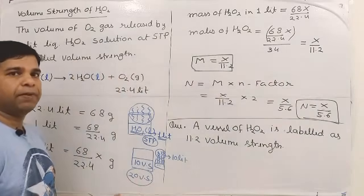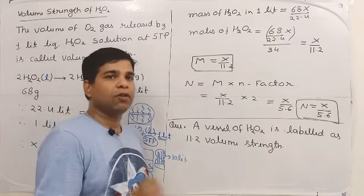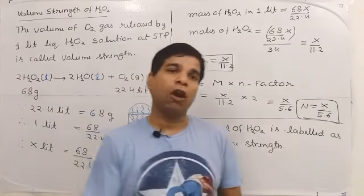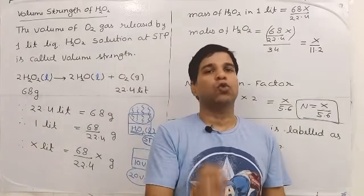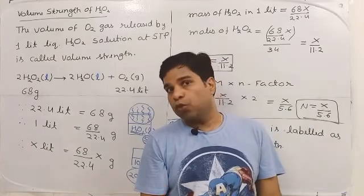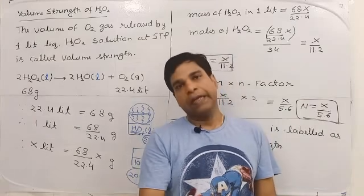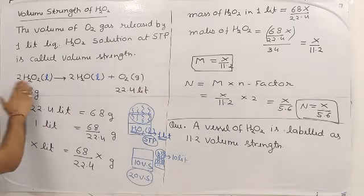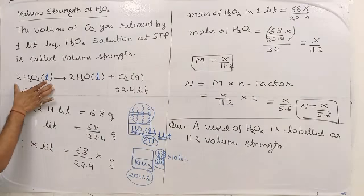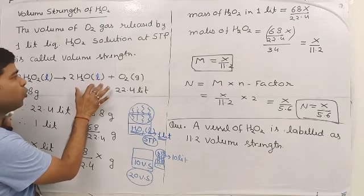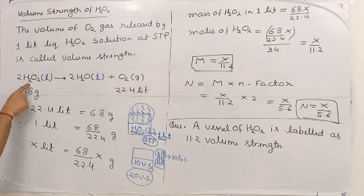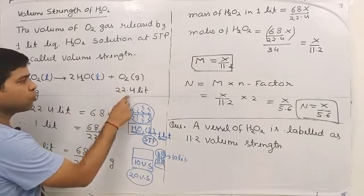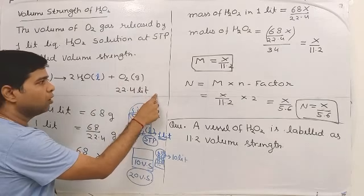So volume strength of H2O2 solution always represents the volume of oxygen gas that comes out from 1 liter of H2O2 solution under STP conditions. From the dissociation equation, 2 mol of H2O2 (liquid) provides 2 mol of H2O and 1 mol of oxygen gas. Since 1 mol of H2O2 is 34 grams, 2 mol is 68 grams, and this 68 grams releases 22.4 liters of oxygen gas at STP.